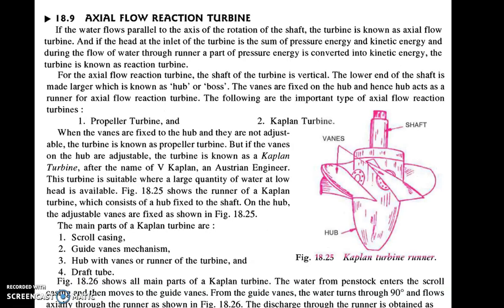In axial flow reaction turbine, the flow takes place in the axial direction, meaning parallel to the axis of the shaft. This is an axial flow reaction turbine, and a famous example is the Kaplan turbine. The Kaplan turbine is an axial flow reaction turbine.